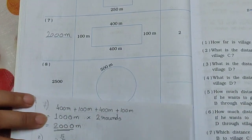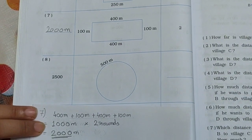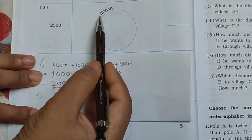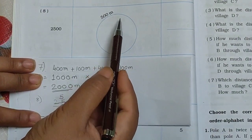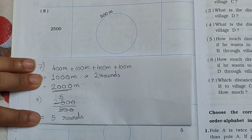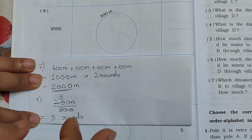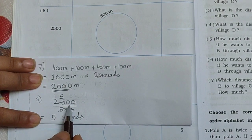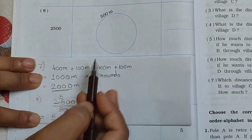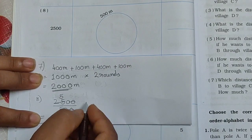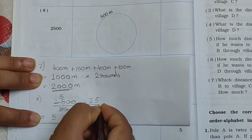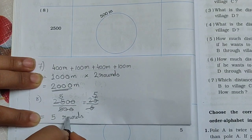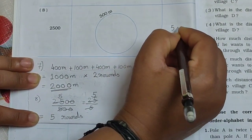Now see the eighth one. Here distance is given as 2,500 meter and field pack measurement is 500 meter. Whenever this type of question is there, you have to find out the rounds, so we do division. 2,500 divided by 500: cancel the zeros, we get 25 divided by 5. 5 fives are 25, so the answer is 5 rounds.